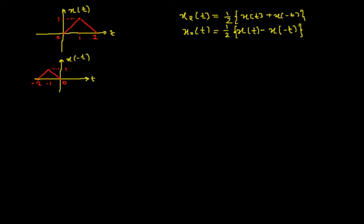Now we are ready with the signal X(t) and X(-t). To get the even part I need to add them and divide by 2, and to get the odd part I need to subtract them and divide by 2. I am drawing the x-axis and y-axis, labeling the y-axis as X(t) + X(-t).